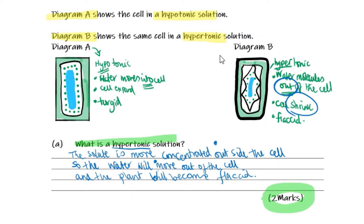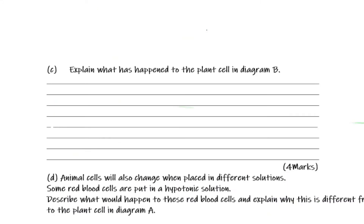Here's Diagram B for hypertonic. Hypertonic means water can move out of the cell, the cell will shrink, and the key word we use is flaccid. Remember, this is for a plant cell.